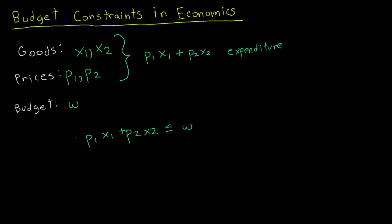Another term you might hear in intermediate microeconomics is a budget set. The budget set is related to the budget constraint — specifically, it is the set of all bundles of goods that satisfy the budget constraint, or in other words, the set of all bundles that are affordable to the consumer given price levels P1 and P2 and income level W.